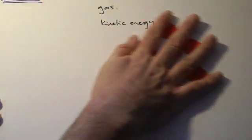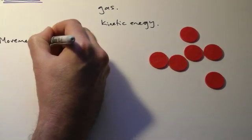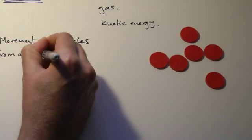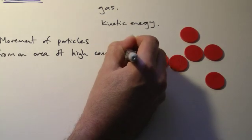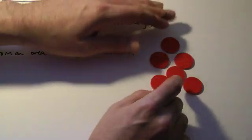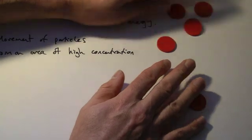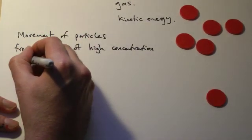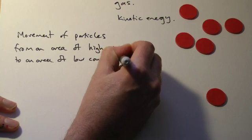So the particles are going to move - movement of particles or molecules from an area of high concentration. What do we mean by that? Well, if we've got a lot of molecules in one area, that's a high concentration. If we've only got a couple of particles, it's a lower concentration. So particles will move from an area of high concentration to an area of low concentration. And that's what diffusion is.